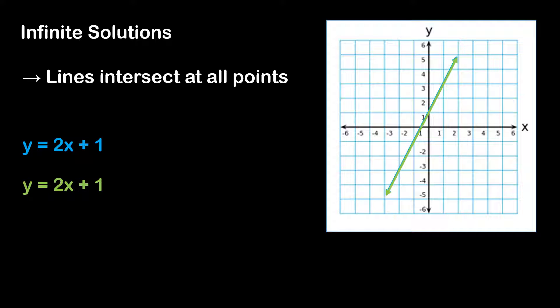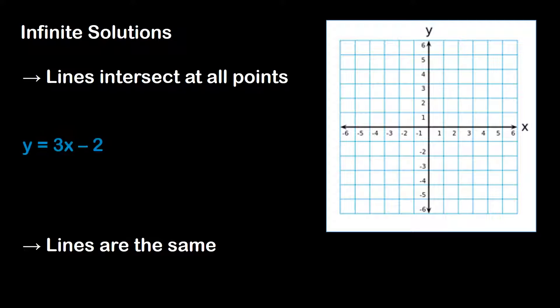So that's it. In order for a system of linear equations to have an infinite number of solutions, the lines basically have to be the same. For example, if we have the equation y is equal to 3x minus 2, and we wanted to have a system with an infinite number of solutions, our second equation would also be y is equal to 3x minus 2.